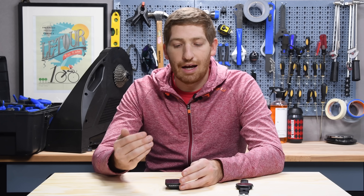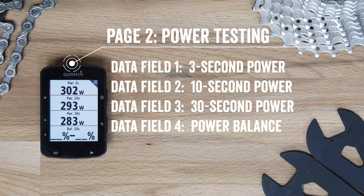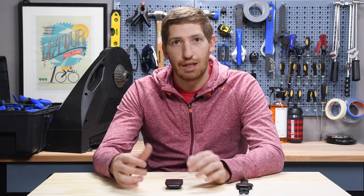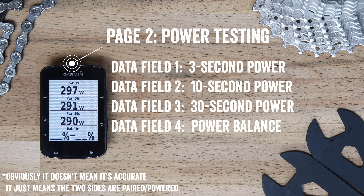If I'm doing power meter testing, I have my power displayed in three different chunks: 3 seconds, 10 seconds, and 30 seconds. At the very bottom I have either balance or cadence. The reason is if I have dual-sided power meters — like Vector 3, PowerTap P1 pedals, or Favero Assioma — I want to validate both sides are functioning. The easiest way is to look at the balance field: valid balance numbers means things are good; if not, something's probably broken.